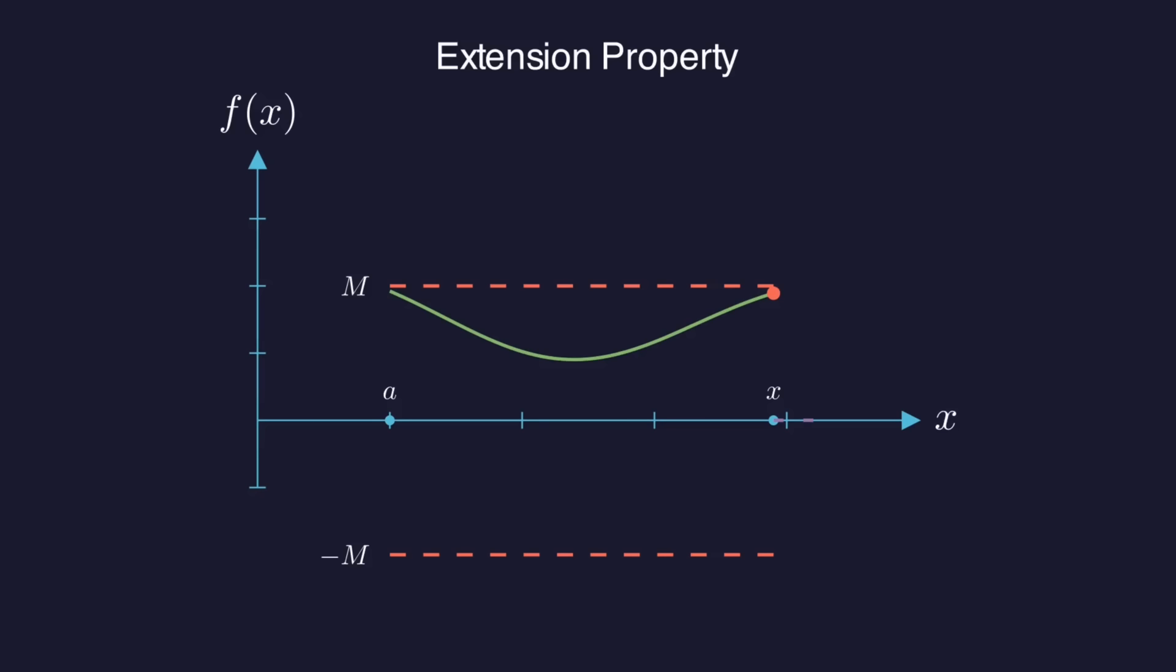Since X is in S, this means that F is bounded on the closed interval from A to X. So let's say the absolute value of F in that range is less than or equal to big M. Now we have to use the definition of continuity. It says that we can pick any positive epsilon. Let's just pick epsilon equal to 1.